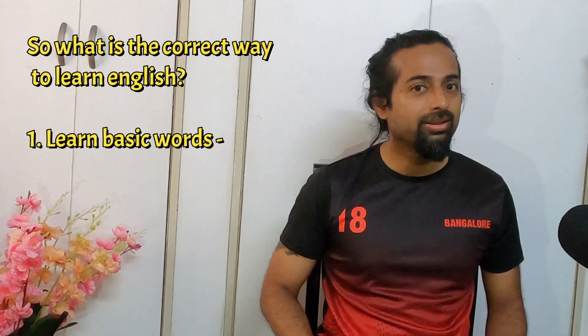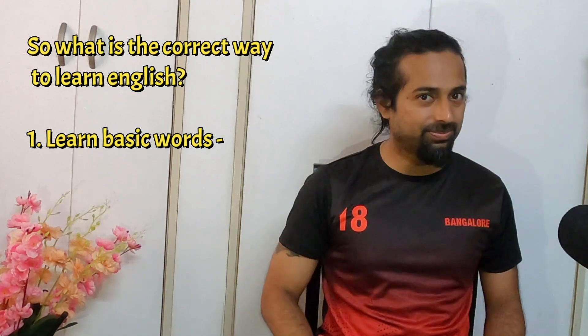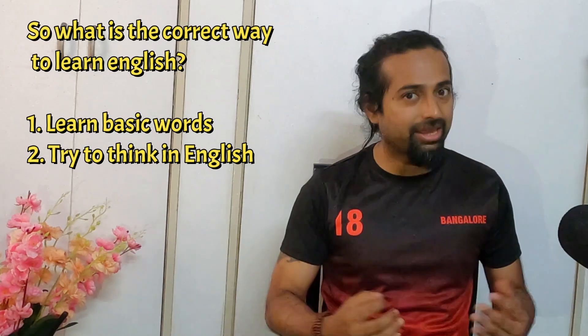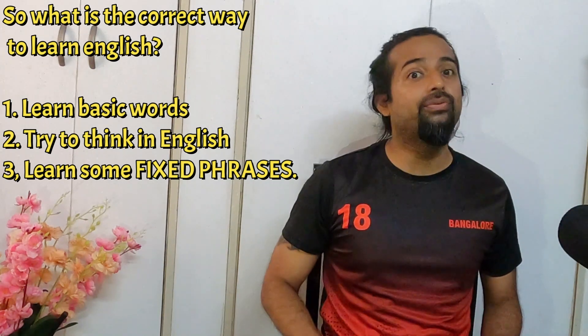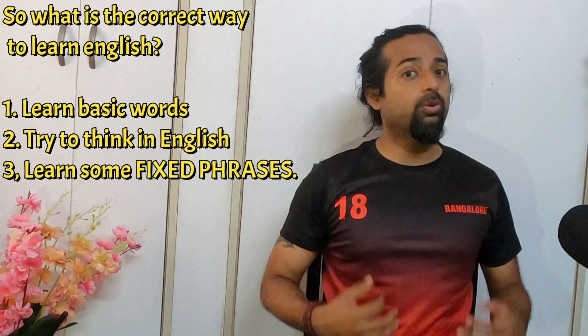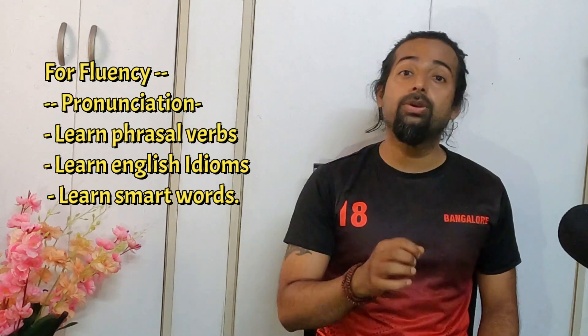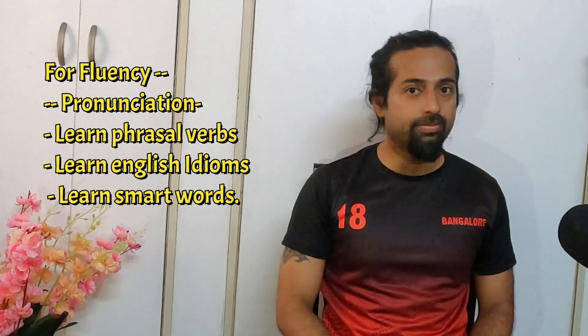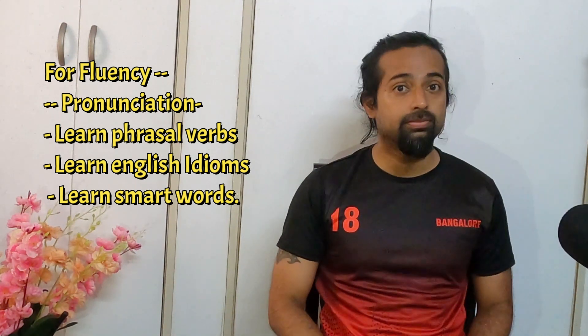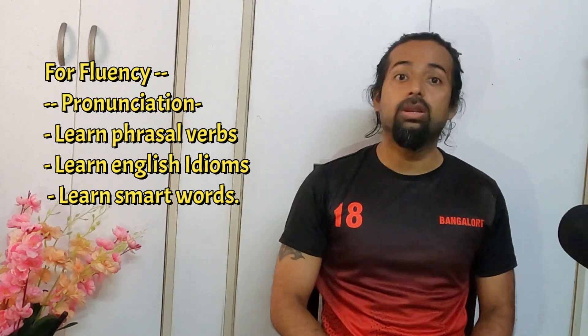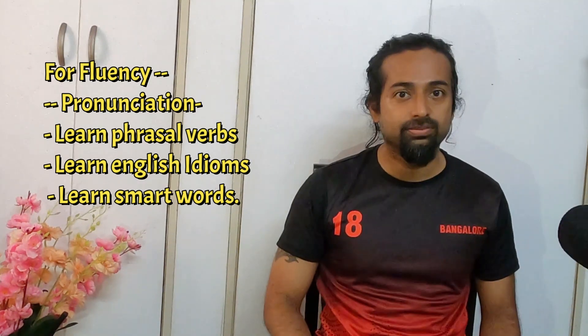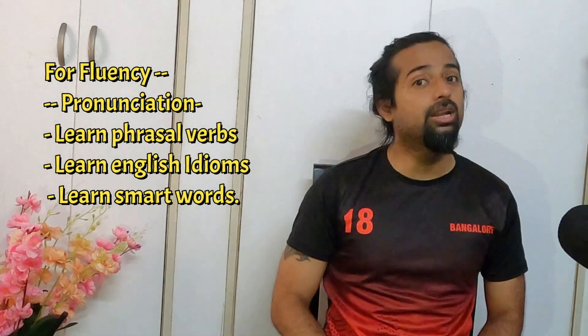So, with these steps you will be able to speak English fluently without any mistakes. What are the correct ways to learn English? Number one: learn some basic words. After that, try to think in English. Learn fixed phrases. Then you can learn grammar. And also, for fluency, you need to develop your pronunciation. Learn phrasal verbs, learn English idioms, learn smart words. All of these will help you in your English learning process.